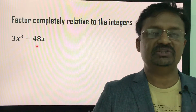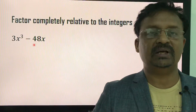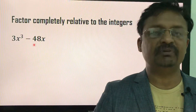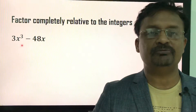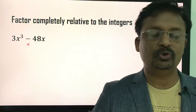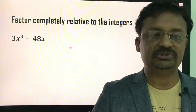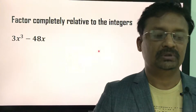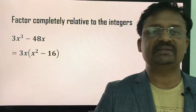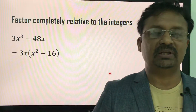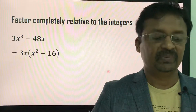Please check if there is any common factor among these two terms. Check the coefficients 3 and 48 — 3 is the common factor. For the variable part, x³ and x — x is the common factor. So I am going to take out 3x as a common factor.